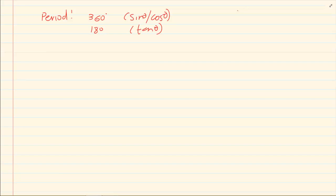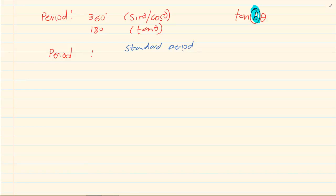Now what happens is your equation has slightly changed. We have now started fiddling with the x-axis. Our B has started changing our x-axis, and once we started changing our x-axis we started changing our period. What we do now is calculate the period — you take the standard period and divide it by B. So for example if I gave you tan 3θ, the standard period is 180 degrees. Dividing by 3 means the period is now 60 degrees, so within 60 degrees you would have one complete graph.